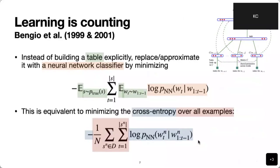The unfortunate thing is those tables tend to be really, really large. Having a large table has issues — memory is a problem, retrieval takes a lot of time, and there is also an issue with generalization.